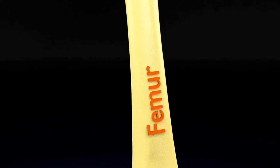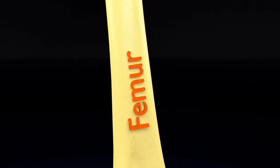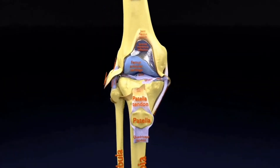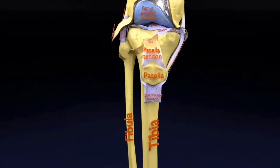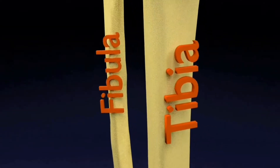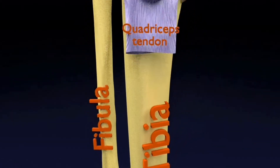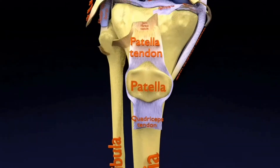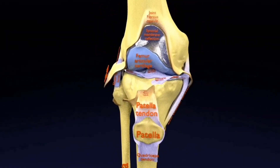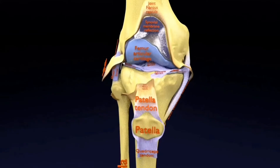Starting with the bursa. A bursa is a synovial fluid-filled sac found between moving structures in a joint, with the aim of reducing wear and tear on those structures.